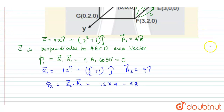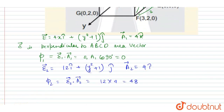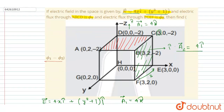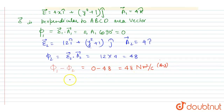The question asks for φ1 minus φ2. We know φ1 = 0 and φ2 = 48, so φ1 − φ2 = 0 − 48 = −48 N·m²/C. So the answer is −48 newton metre squared per coulomb. This was our question — calculating the flux difference through BCEF and ABCD.